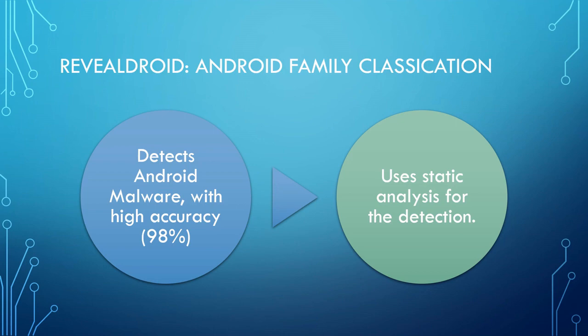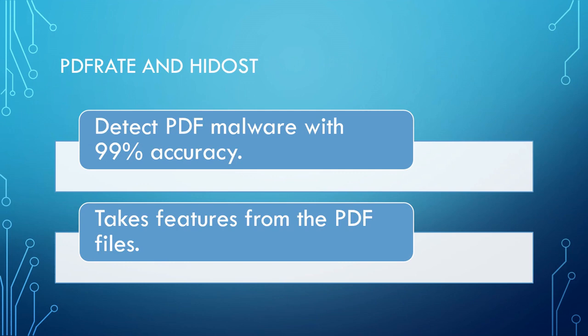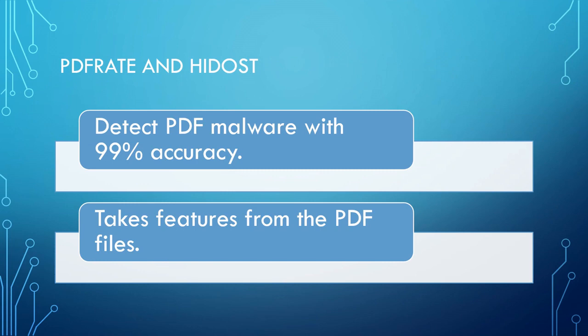There is also a popular tool called RebelDroid for Android malware, which uses permissions, API calls, and static analysis features to detect malware with 98% accuracy — remarkably good. For PDF malware, two popular tools are PDF Raid and HITOS, both achieving 99% accuracy — better than any traditional antivirus, and cheap to train. So people started asking: has machine learning solved the problem?